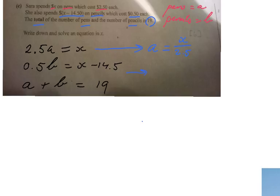And I can do the same thing here. I'm going to make B the subject. B equals 2X minus 29. Do you follow that? I multiply by 2 to get 1B: 2X minus 29, or I divide by a half. X divided by a half is 2X, and minus 14.5 divided by a half is minus 29. So A is X over 2.5, B is 2X minus 29.